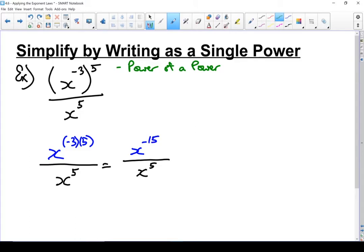Next I can use the quotient of powers rule. In that case, I've got the same base. I'm going to subtract those two exponents. My base is x. Minus 15 minus 5 gives me x to the minus 20.